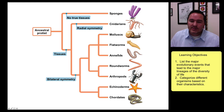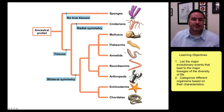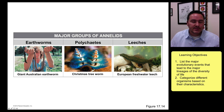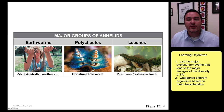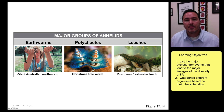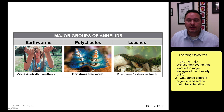Related to the mollusks and flatworms are organisms like annelids. Annelids include earthworms, but also the polychaetes, or so-called Christmas tree worms, which are entirely marine. They also include leeches.